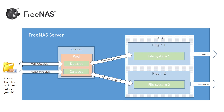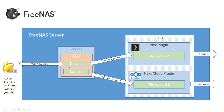Now let me show you the specific version of the setup we'll use. We'll have two plugins: the first is the Plex plugin for media services, and the second is the Nextcloud plugin for cloud services. The Plex plugin is mounted to a dataset which can be accessed through Windows SMB. You put your videos, movies, and TV shows into the dataset via Windows SMB, and then Plex accesses those media files through the mounted volume and renders them to your desktop or TV.